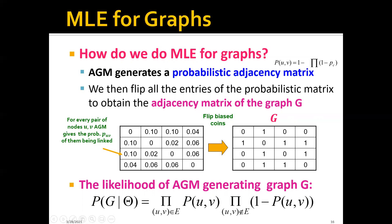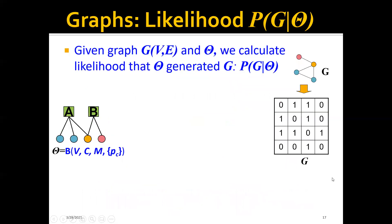We can see that this equation is just a product of a lot of terms. So basically for each node pair where there is an edge, we have a term P(u,v). And for each node pair without an edge, we have a term 1 minus P(u,v). So basically P(u,v) is the probability that U and V has an edge.